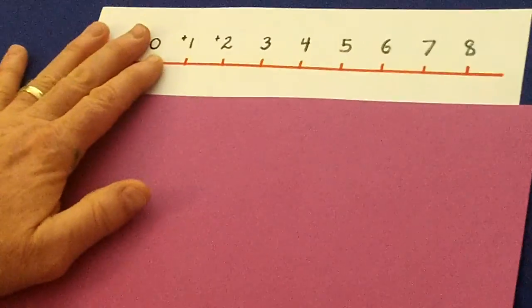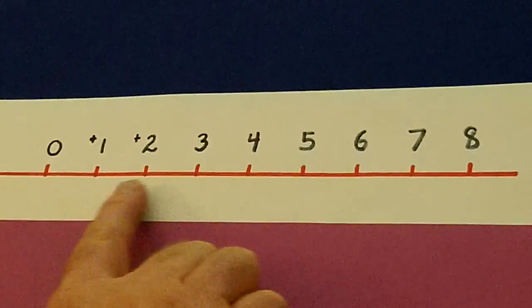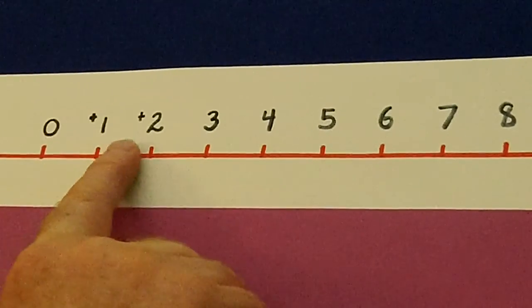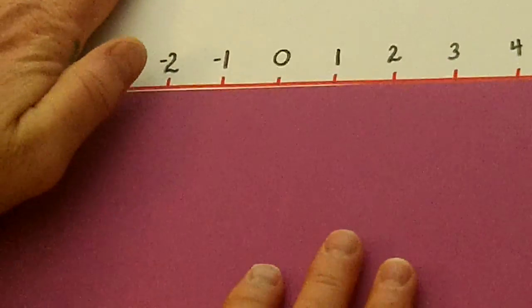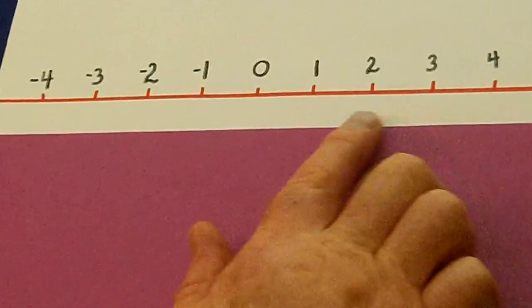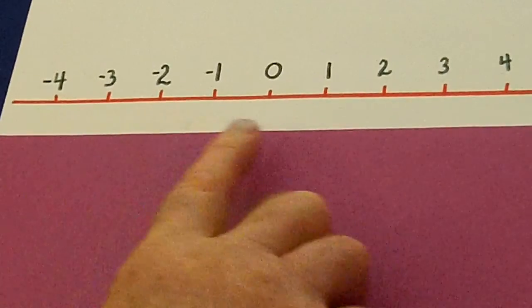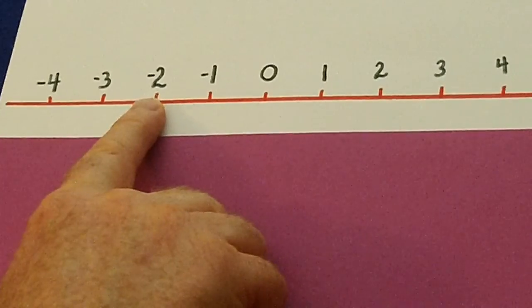Many of us learned about how to compare numbers that were positive, and that may have been in second, third, fourth grade. But some of you in fifth grade started to compare positive numbers with negative numbers. Like here's a positive 2, here's a negative 2.